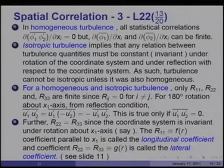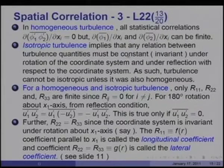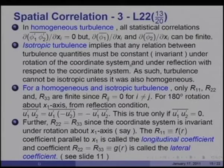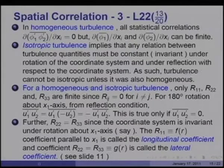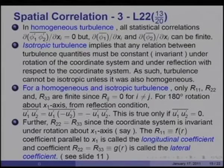Isotropic turbulence implies that any relation between the turbulence quantities must be constant or invariant under rotation of the coordinate system and under reflection with respect to the coordinate system. As such, turbulence cannot be isotropic unless it is also homogeneous.